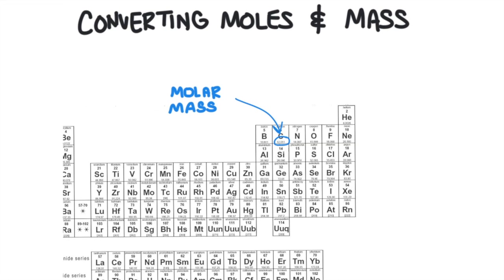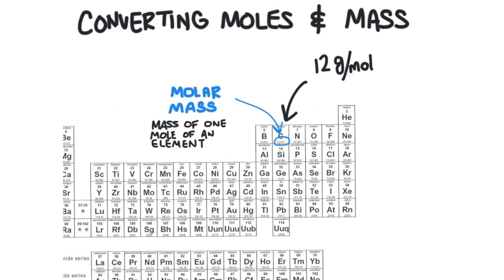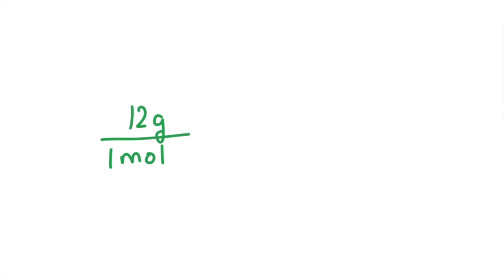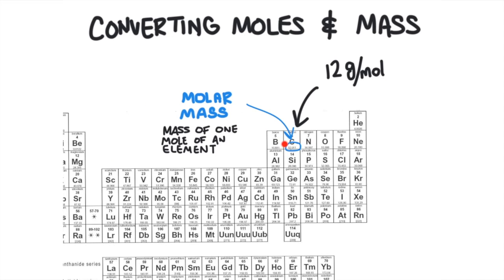Next, let's learn how to convert between mass and moles. The conversion factor that compares the mass of a substance to moles of the substance is found on the periodic table — this is the molar mass. It is the mass of exactly 1 mole of that particular element. So carbon has a molar mass of 12 grams per mole; that is, 1 mole of carbon atoms has a mass of exactly 12 grams. We can write the molar mass as 12 grams per 1 mole, or 1 mole per 12 grams. We usually round up the number on the periodic table to the nearest whole number.